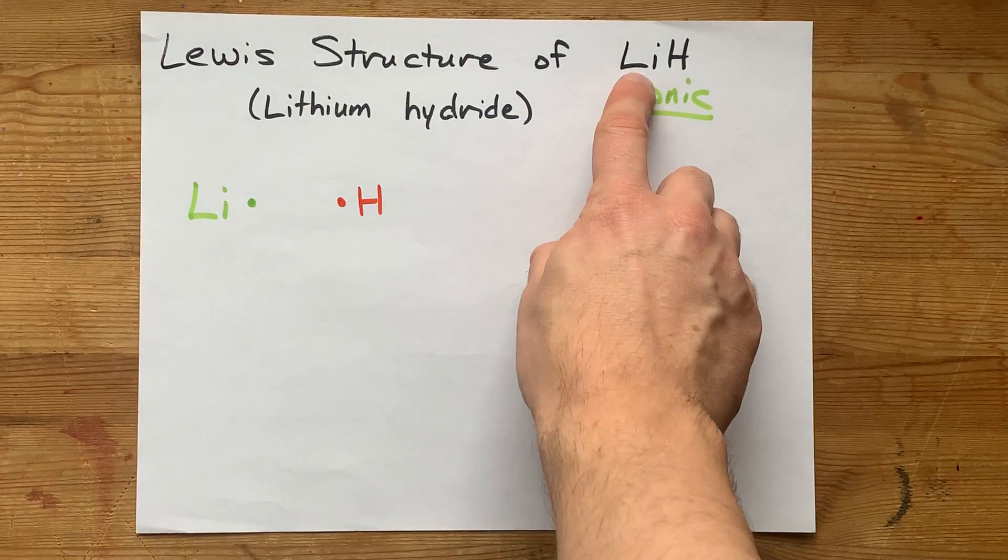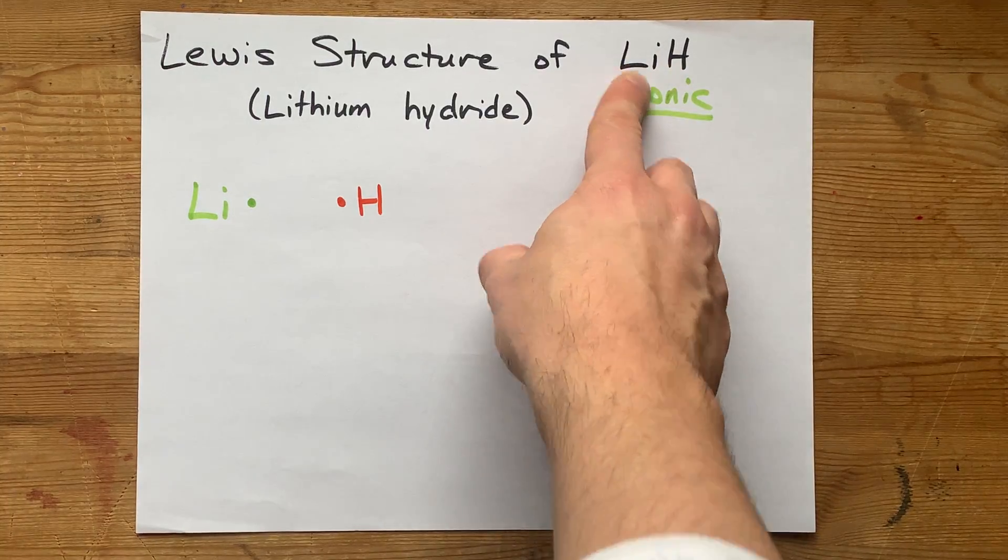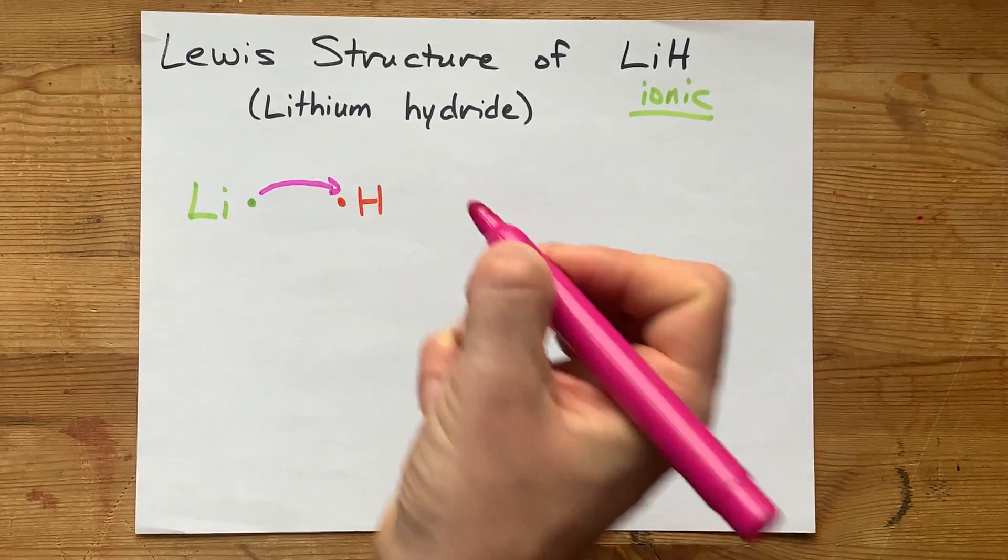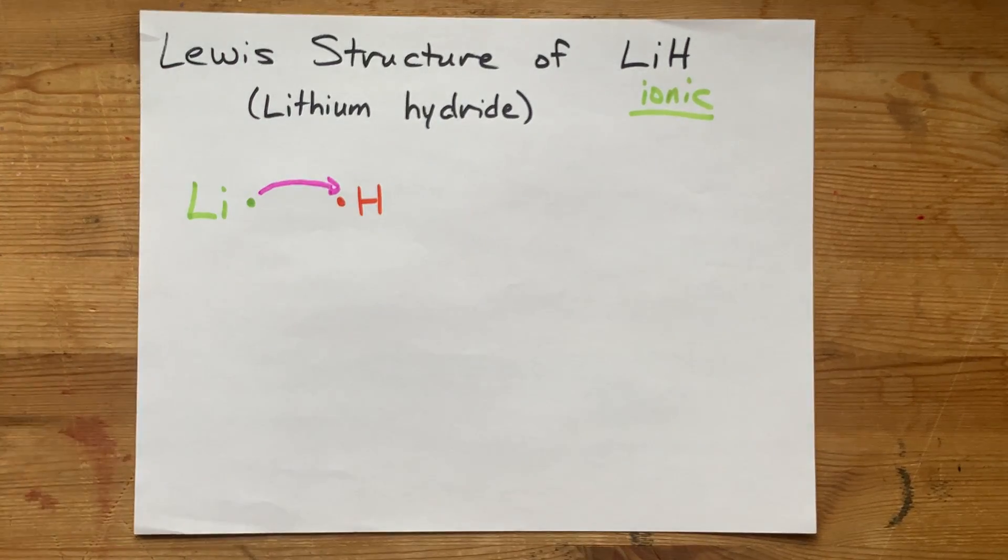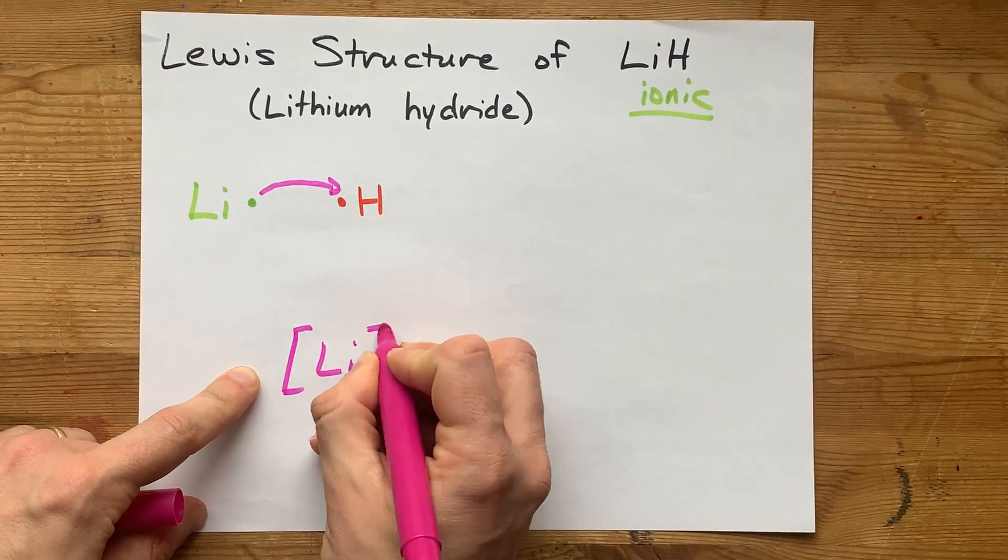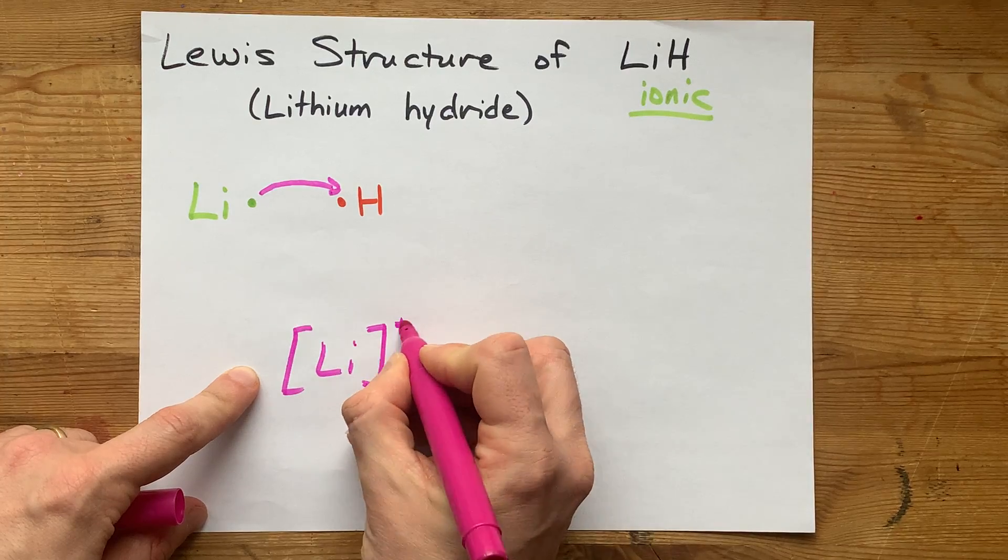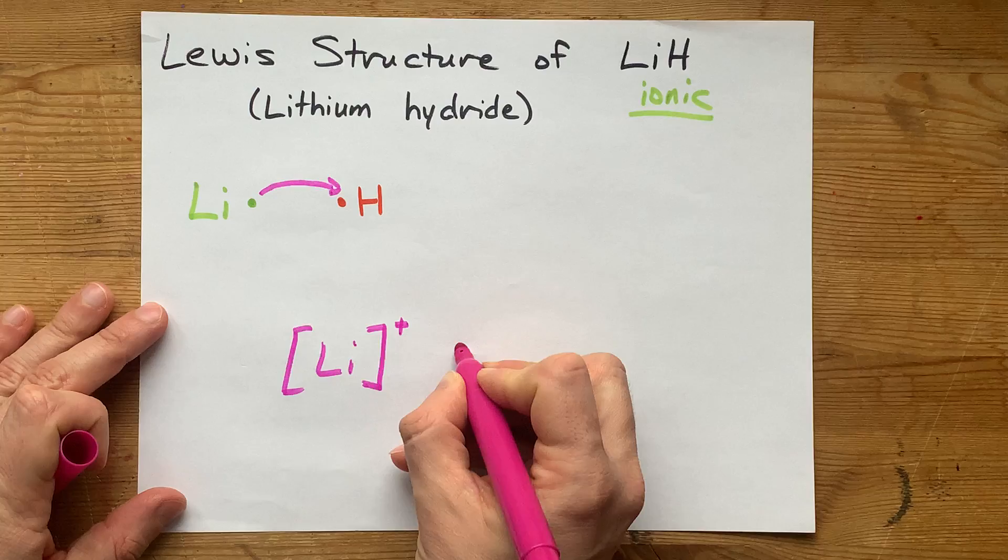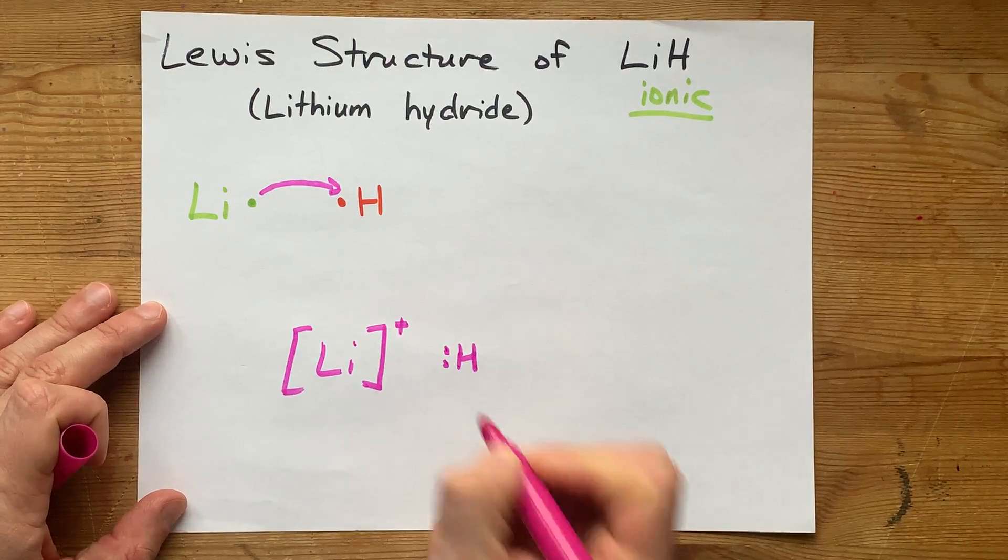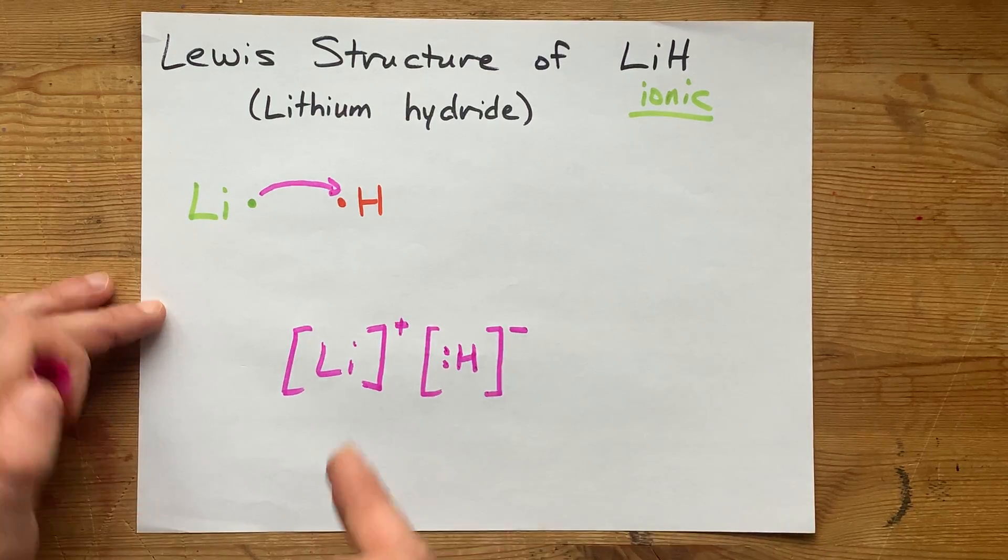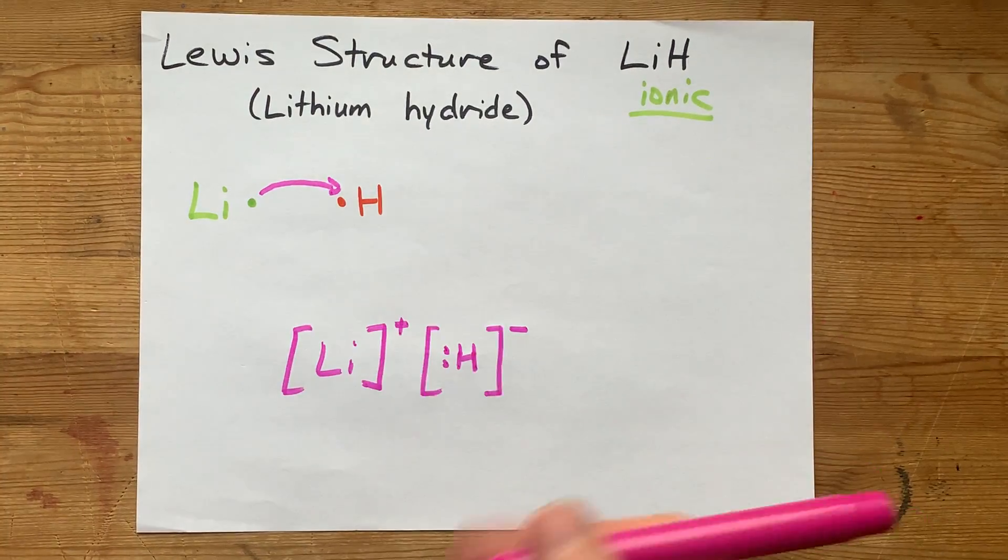But for lithium hydride, lithium is losing its electron and giving it to hydrogen. That means what you're left with is lithium with no electrons around it, a plus one charge because it lost one electron, and you have hydrogen, which now has a pair of electrons, and a minus one charge because it's one extra electron than it had brought with it.